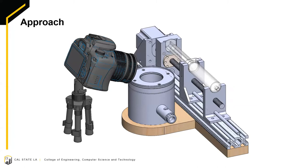Here we have a render of the experimental setup. You can see a syringe-based pressure application system on the right, a sealed pressure chamber in the middle, and a camera to image the sample. This is a visual representation just to show the components of the setup and not exactly representative of the final results. The pressure transducer used to measure the pressure and the camera will be connected to a computer for data logging.